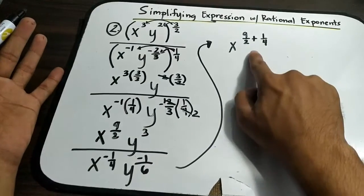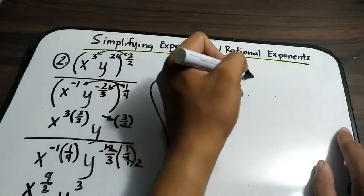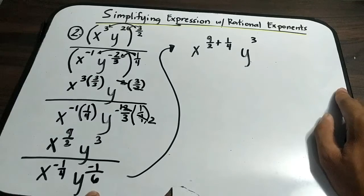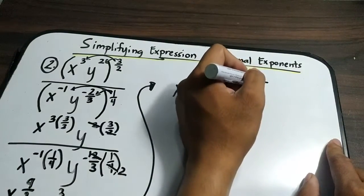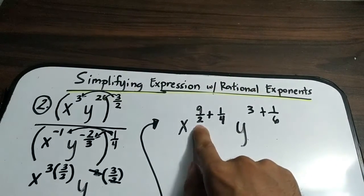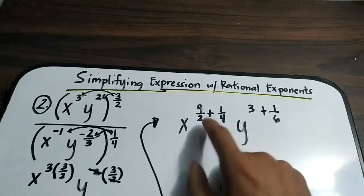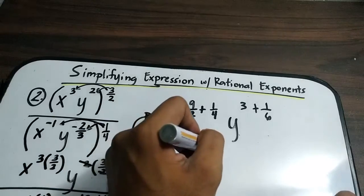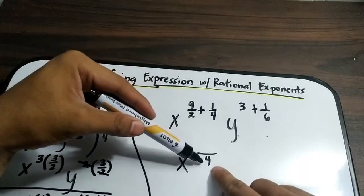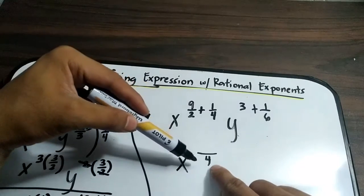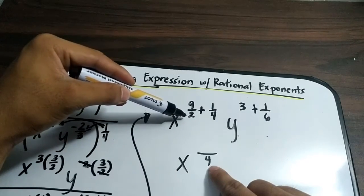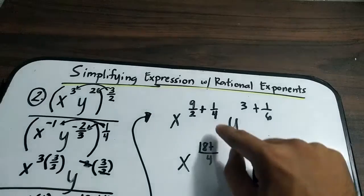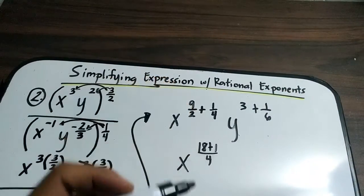For y, we have y cubed minus negative 1 over 6, which becomes y cubed plus 1 over 6. The denominators are different, so we find the LCM. The LCM of 4 and 2 is 4. Dividing 4 by 2 gives 2, times 9 equals 18; plus 4 divided by 4, which is 1 times 1, gives 1. So the numerator for x is 18 plus 1.